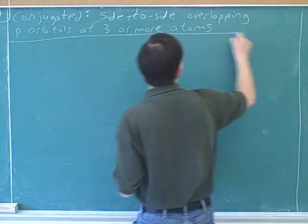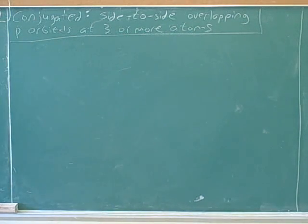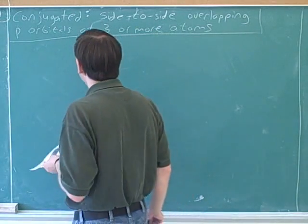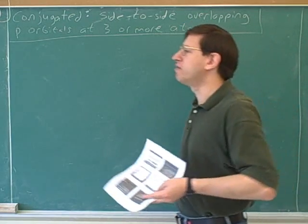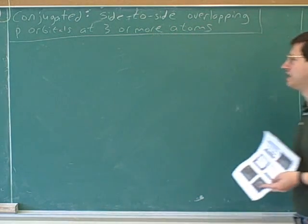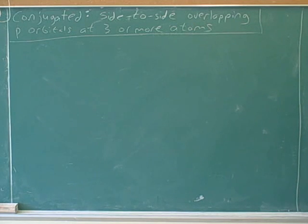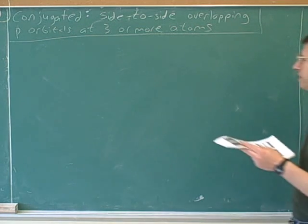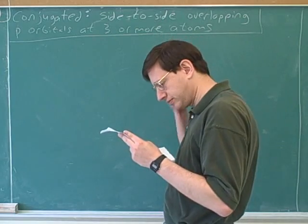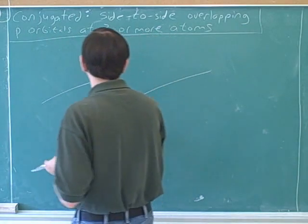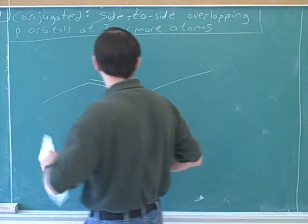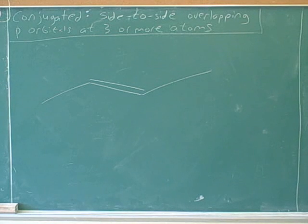Three or more adjacent atoms. Now, the word adjacent is kind of superfluous — they can't be overlapping if they're not adjacent. So adjacent is a redundant word; there's no way they could be overlapping unless they were adjacent atoms. But they do have to be at adjacent atoms. Let's review the topics from that video series because we need to build on that today.